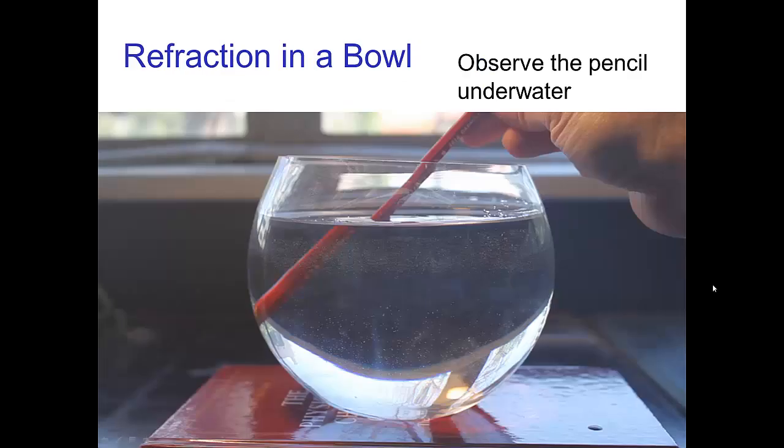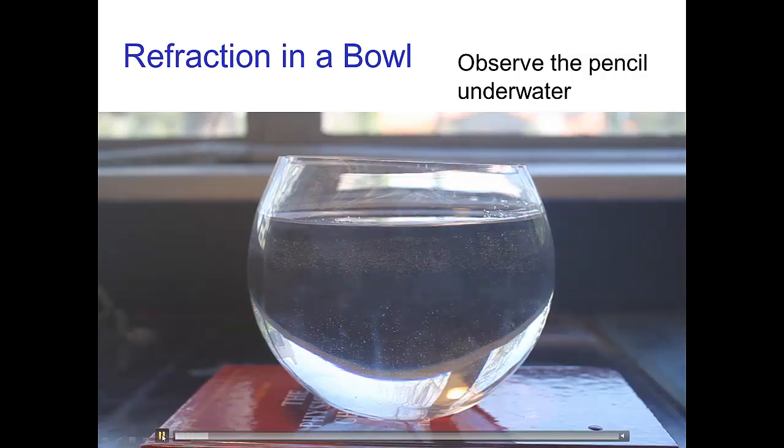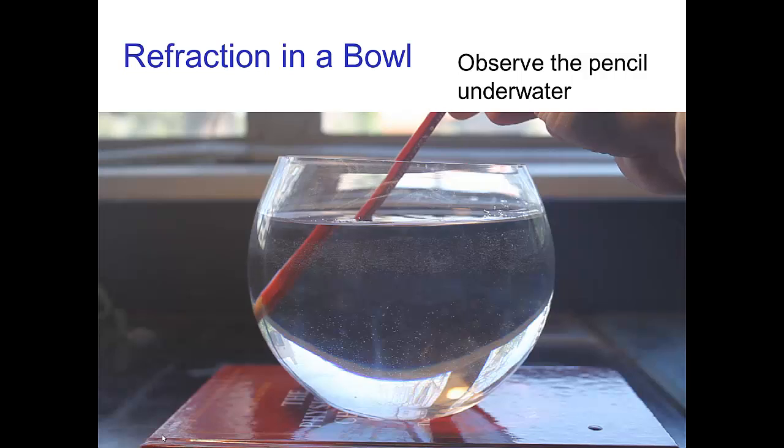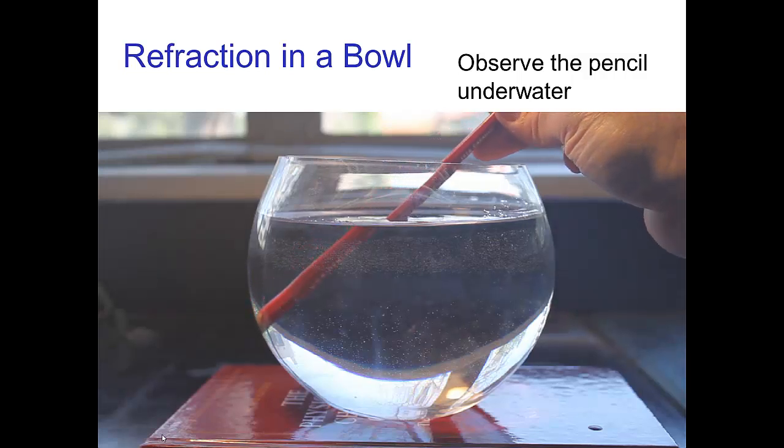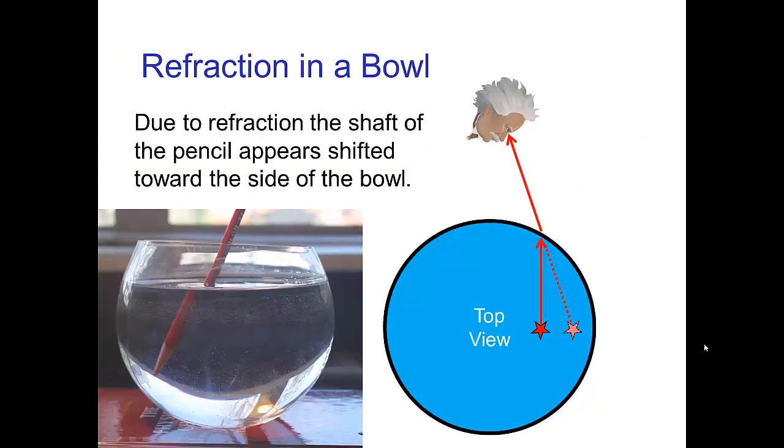It might be easier to understand looking at this example of a pencil underwater. I'm going to take this pencil, dip it underwater, and move it to the side of the bowl. There are two interesting refraction effects going on here. The first is the shaft of the pencil appears to be shifted. If you follow the shaft down underwater, you see it's shifted towards the side.